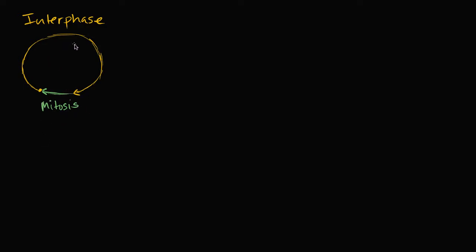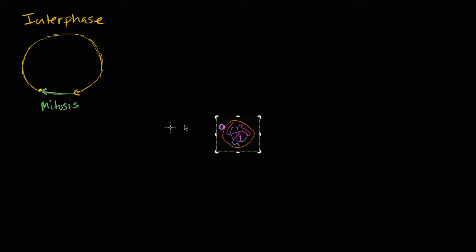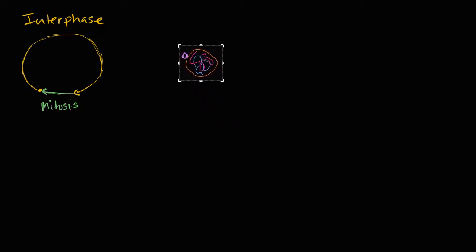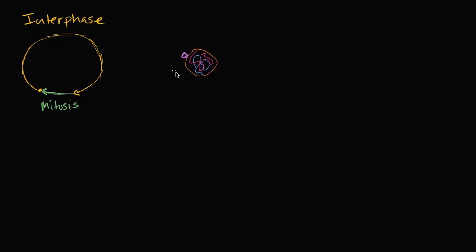But what I want to focus on in this video is interphase. And to do that, let's draw ourselves a cell. So let's say this is a cell. In green, I have its cell membrane. Inside of that, of course, you have all of the cytosol. And then in this orangish color, I have the nuclear membrane that defines the nucleus. And then inside of that, I have the DNA.